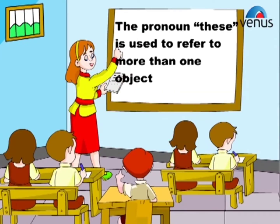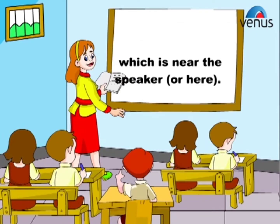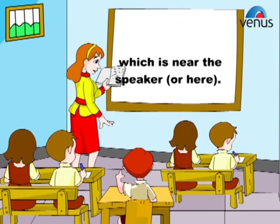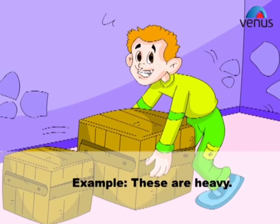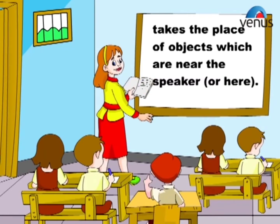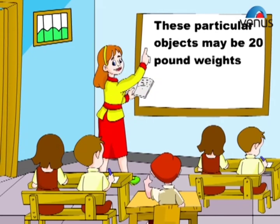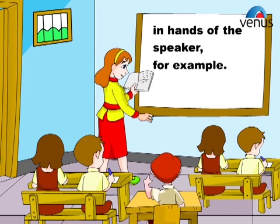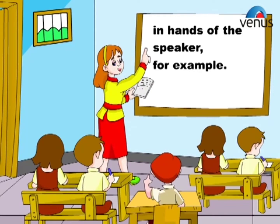The pronoun 'these' is used to refer to more than one object which is near the speaker, or here. Example: These are heavy. In this example, the pronoun 'these' takes the place of objects which are near the speaker. These particular objects may be 20-pound weights in the hands of the speaker, for example.